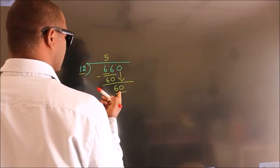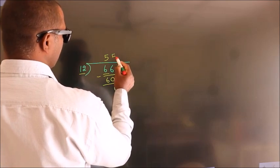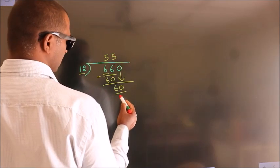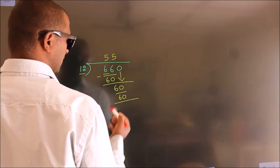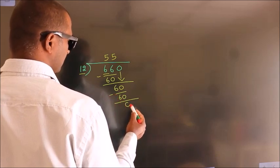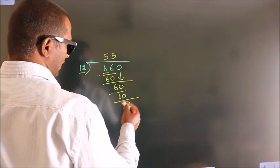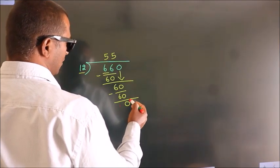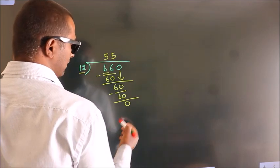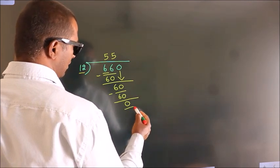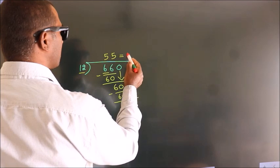When do we get 60 in the 12 times table? 12 fives is 60. Now we subtract and we get 0. After this, there are no more numbers to bring down. We got remainder 0. So this is our quotient.